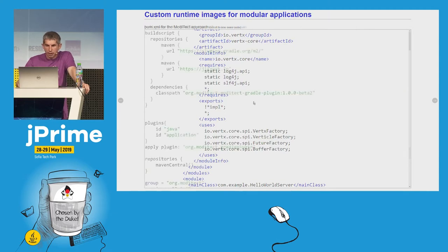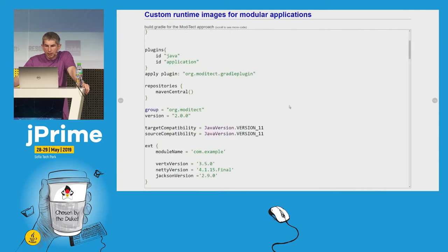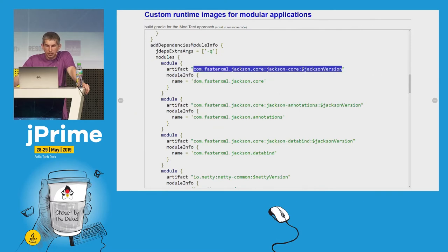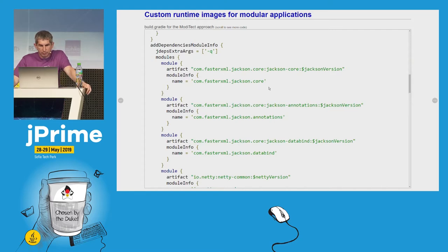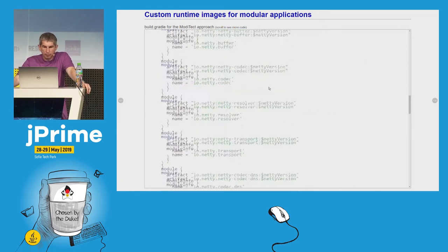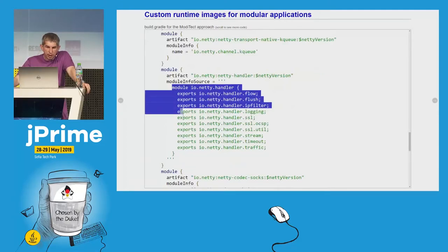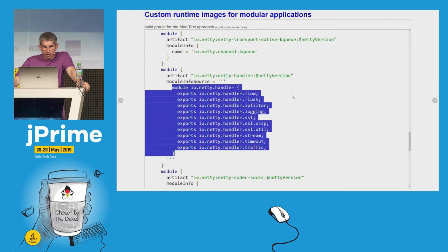With Gradle, we need to make something similar. We use the Moditect Gradle plugin, and then again for each non-modularized artifact we need to configure the module descriptor. Again, most of the time we only need to provide a name for the module descriptor. But sometimes, if jdeps is not able to generate the correct module descriptor, we can explicitly provide the content of this module descriptor.